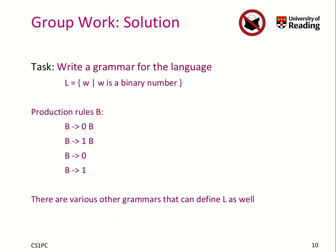So we wanted to write a grammar for the language L, which consists of words W where W is a binary number. We can use the production rules for B. We need to generate any binary number. Certainly a binary number is zero, so we need to generate zero. Certainly another binary number is one, so we need to generate one.